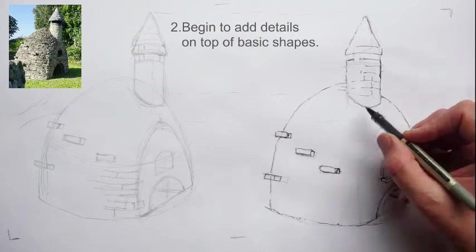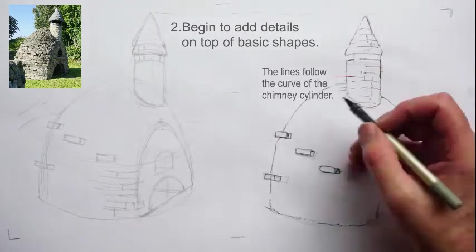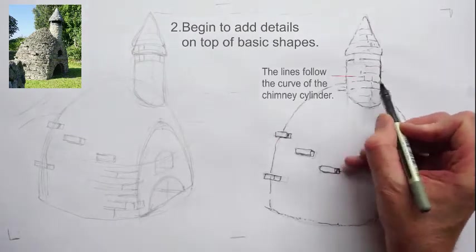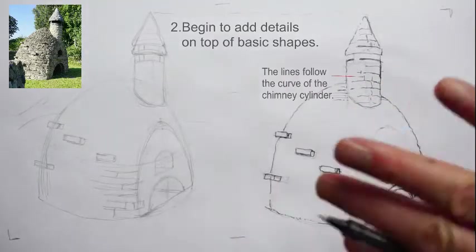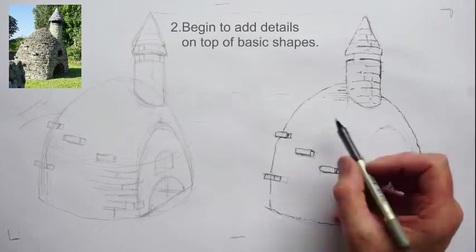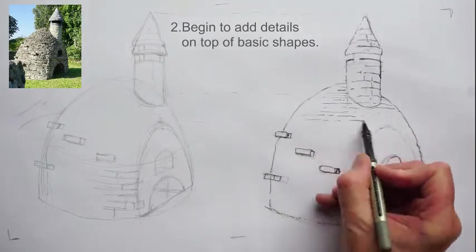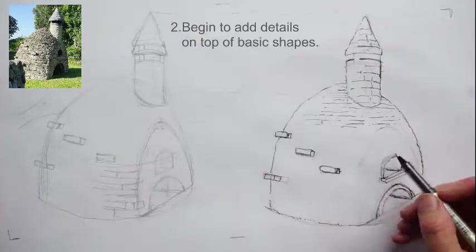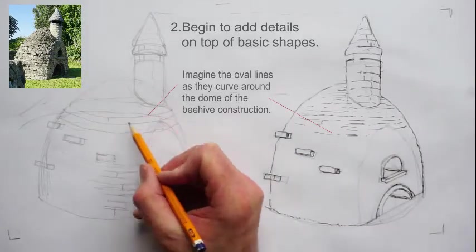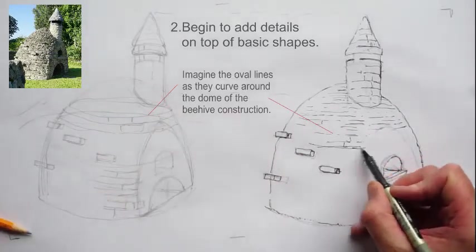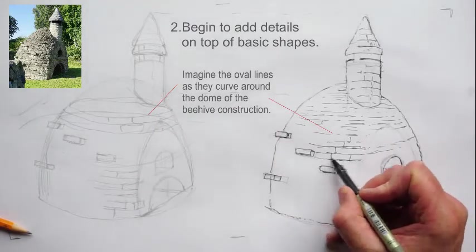So yeah, basically circular kind of curving lines around following the shape of the cylinder of the chimney. And the same will apply more or less to the kind of oval line work on the main beehive itself. If you can see it here, we kind of, that can be our model.